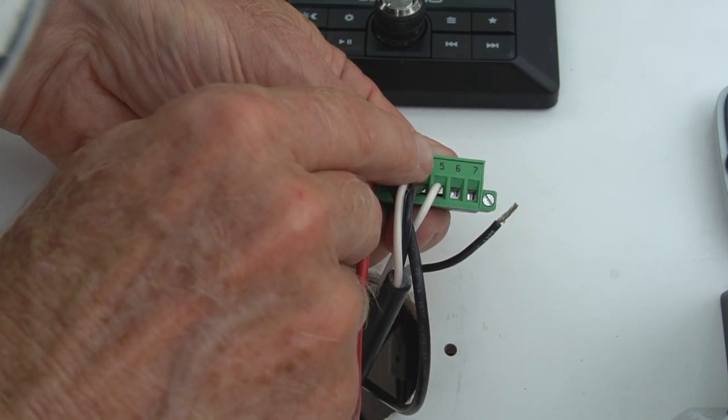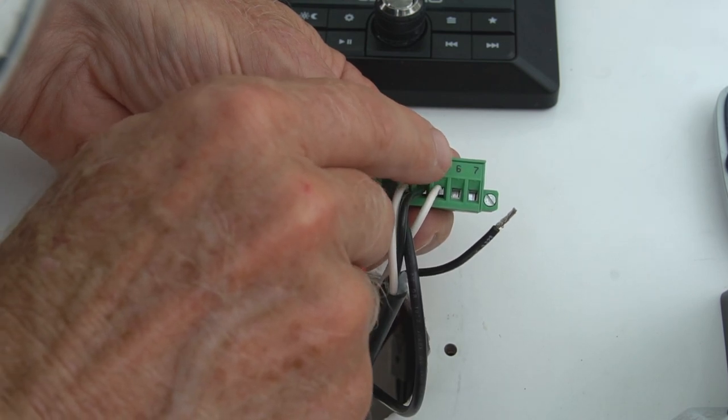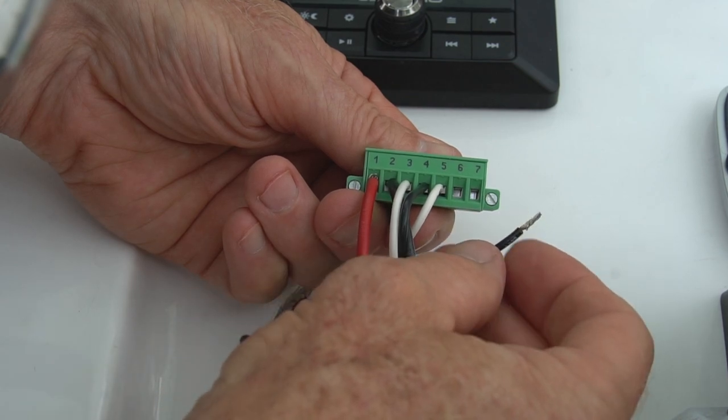Five is the white starboard actuator. Six is the black starboard actuator wire. Terminal seven is for the ignition or key-switch wire.